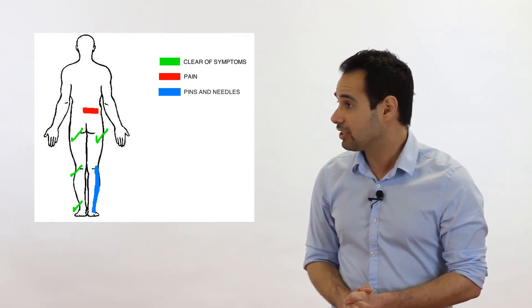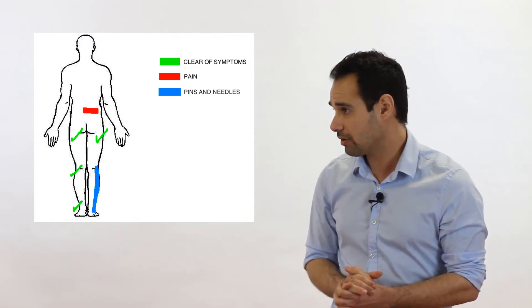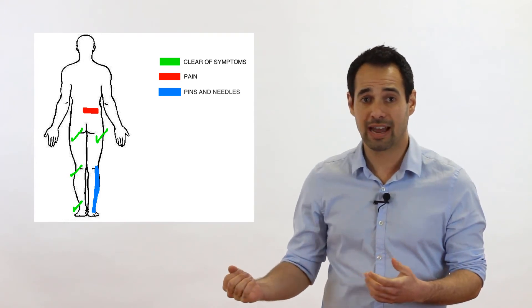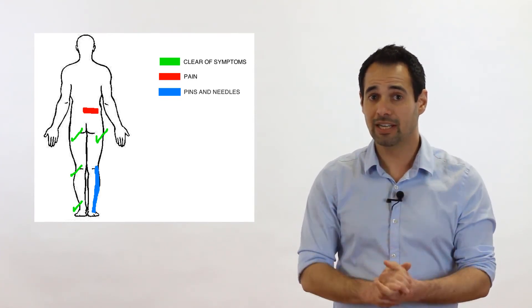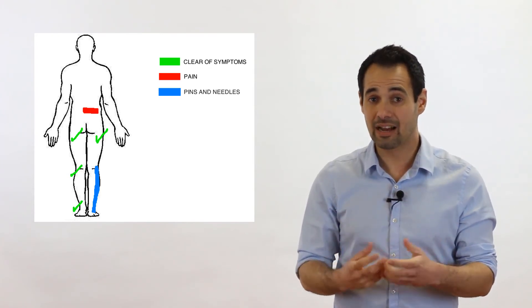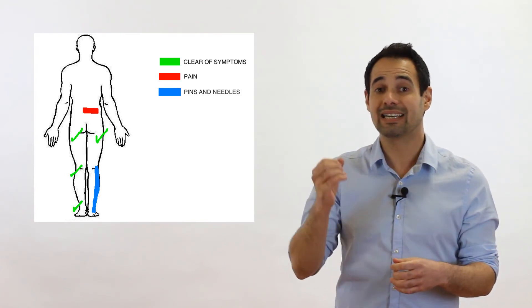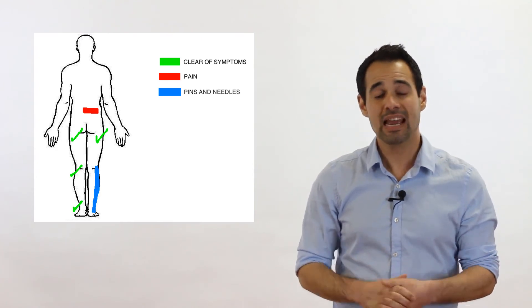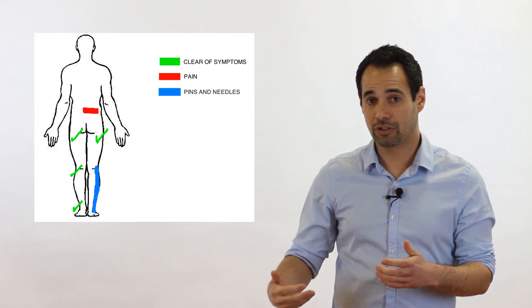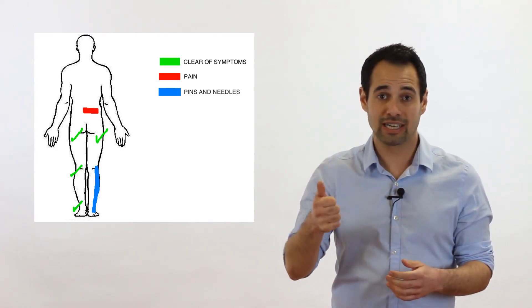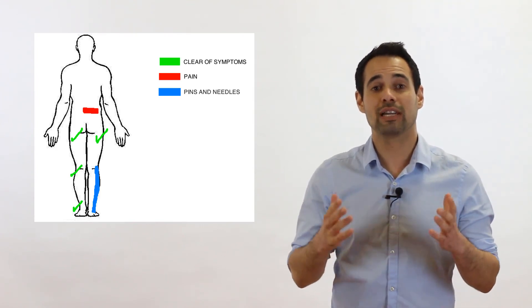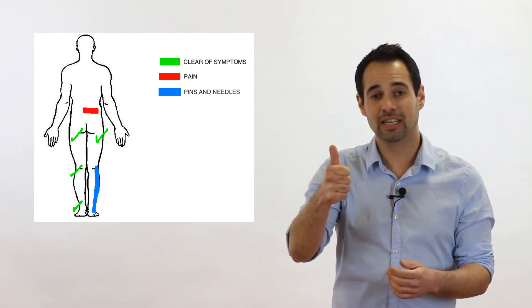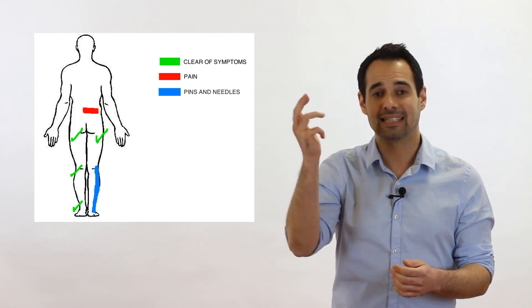Our final patient has pain at the lumbar spine with pins and needles spreading from the knee down to the ankle. For joints above and below, the thoracic spine and the hip both need clearing with range of movement testing with overpressure. And because of the pins and needles, we need to consider spreading a neuro — focusing on the lumbar spine — and complete a lower limb neurological assessment including dermatomal testing, myotomal testing, reflex tests, and tension tests of the lower limb.